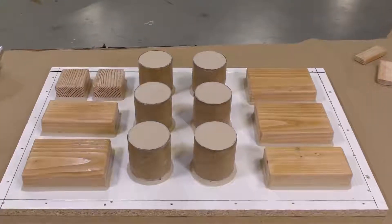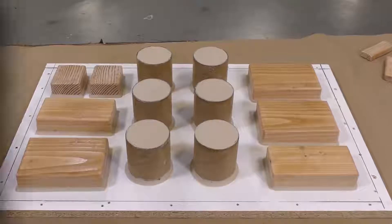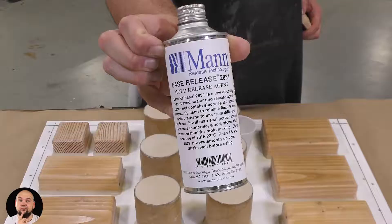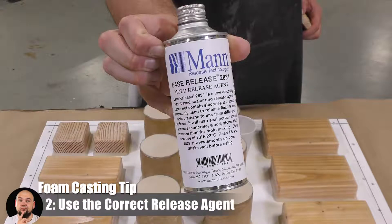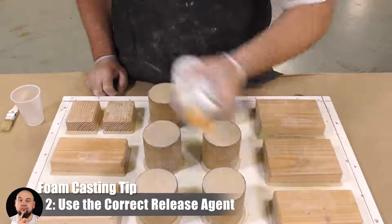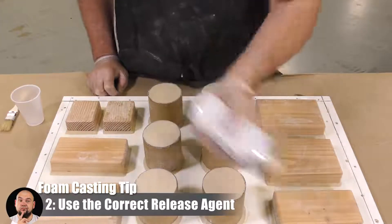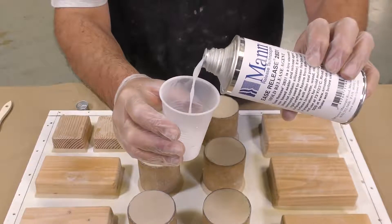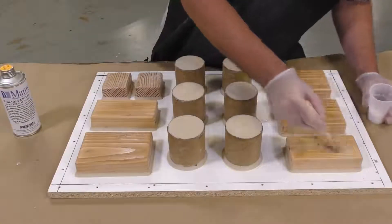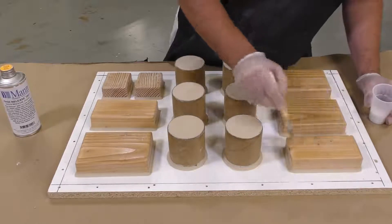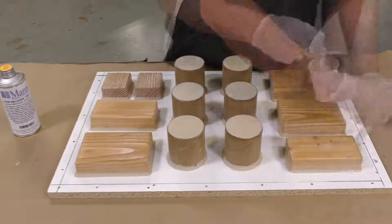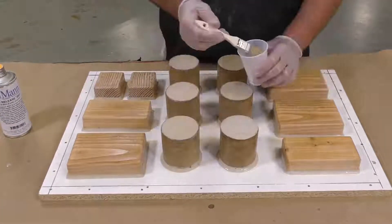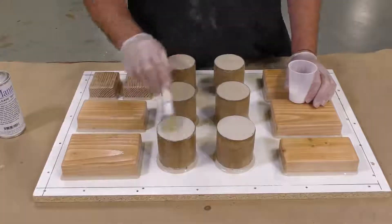Before we move on to the next step, it's really important that we put a release agent down on our pattern. Because we're using urethane foam, we're going to use a release agent that's specifically developed for this type of material. This is Ease Release 2831 and we're going to apply two layers to the entire pattern and allow it to dry for about 20 to 30 minutes. Make sure that you don't allow this material to pool up in sections of your mold box because it will influence the way that the final pattern is going to look.